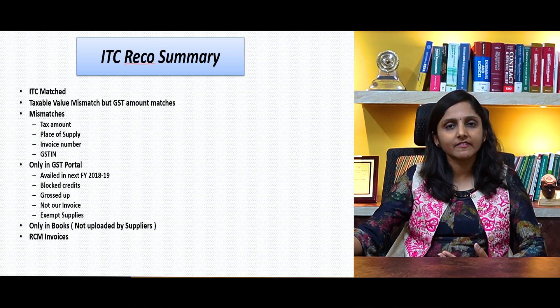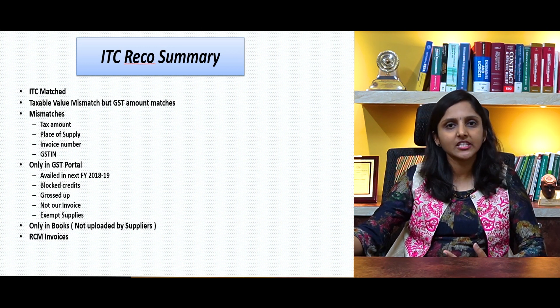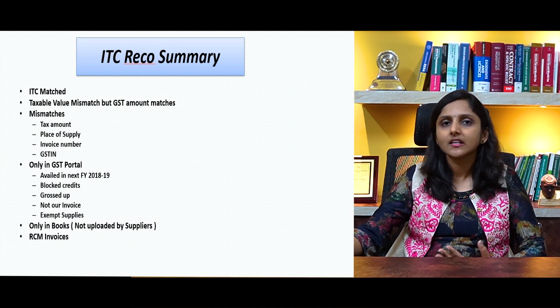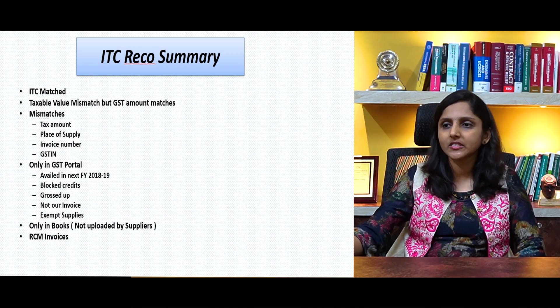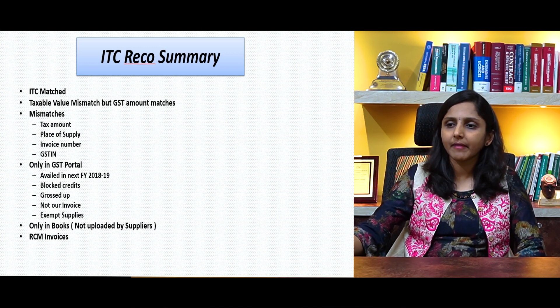There could also be cases where suppliers have not uploaded the invoices and hence it is only found in my books of accounts. They may have classified it as B2C instead of B2B. Some suppliers have not uploaded and have not even discharged the taxes. There could also be another category which is my RCM invoices — that is, reverse charge mechanism — such as GTA services and other kinds of RCMs which appear in my GSTR-2A.